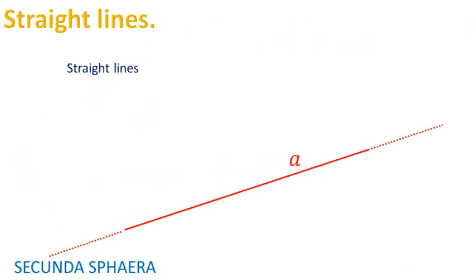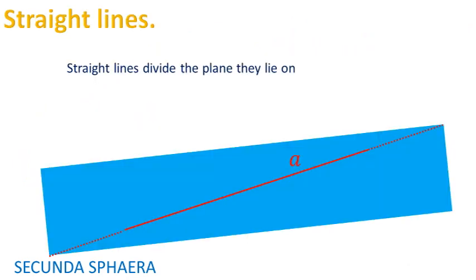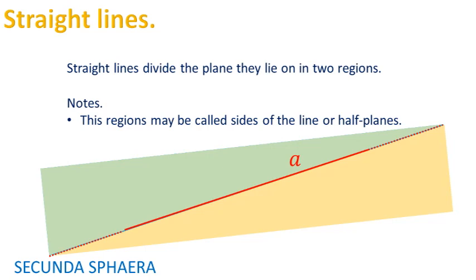Straight lines divide the plane they lie in into two regions. These regions may be called sides of the line. Another fancy word for calling these regions is half plane. It is sometimes important to know if given two things, they lie on the same half plane with respect to a straight line or not.